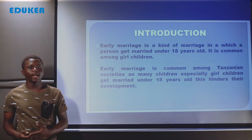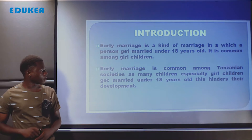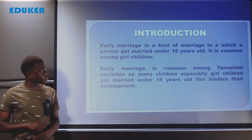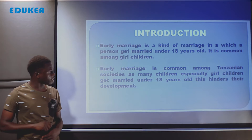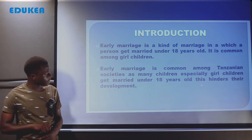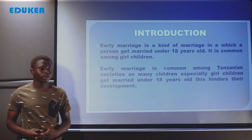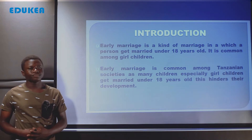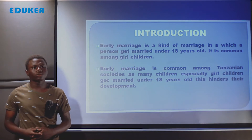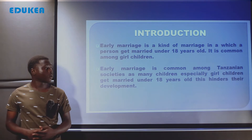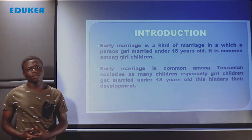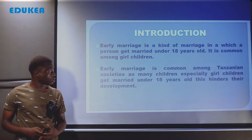Early marriage is common among Tanzanian societies, as many children — especially girl children — get married under 18 years old, and this hinders their development. Sasa tunaona ndoa za mapema ni common sana katika jamii yetu ya Tanzania, ambapo watoto wakike wanaolewa wakiwa na chini ya umri wa miaka kumi na nane, na hii inapelekea kukwamisha maendeleo yao.